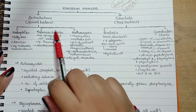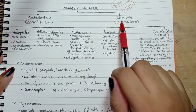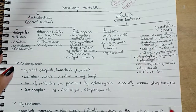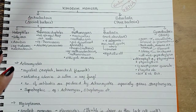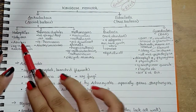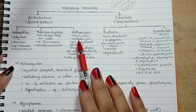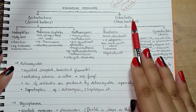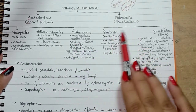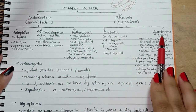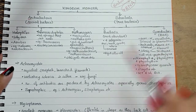So, archaebacteria means ancient bacteria and eubacteria means true bacteria. Archaebacteria is divided into three: halophiles, thermoacidophiles, and methanogens. And eubacteria is divided into two: bacteria and cyanobacteria.